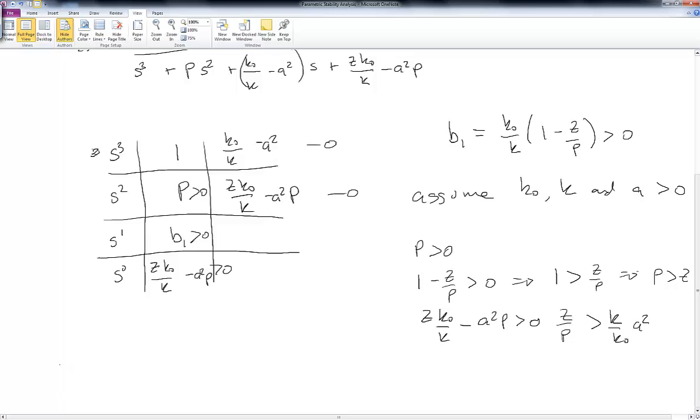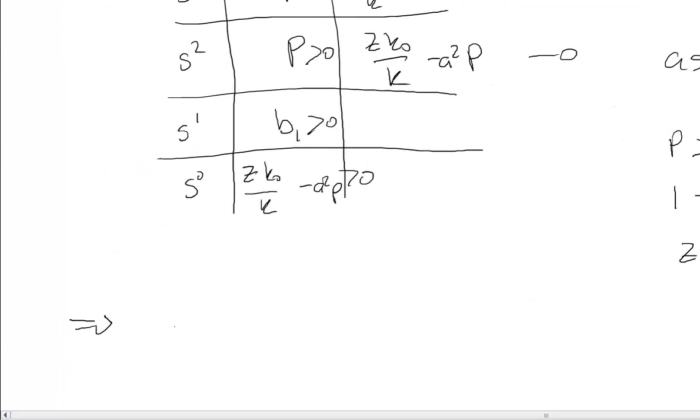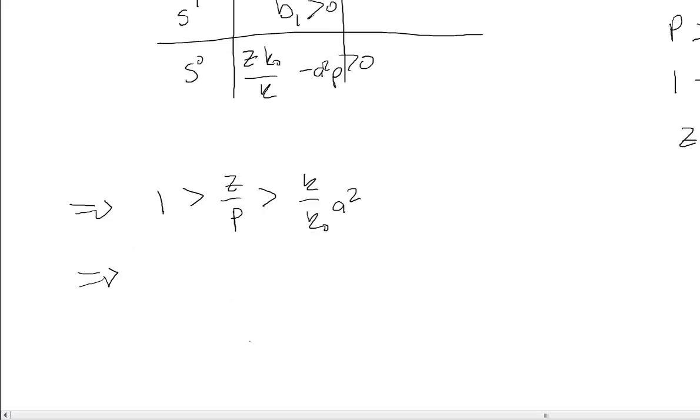So we can put both of those together, and we end up with 1 has to be greater than Z over P has to be greater than K over K-naught A squared. Or if I multiply through by P, I end up with P has to be greater than Z has to be greater than K over K-naught A squared times P.